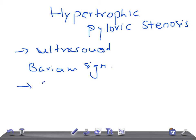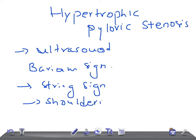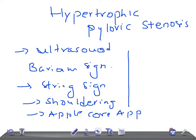On a barium meal, the different signs include — most importantly — the string sign, shouldering, apple core appearance, and double track sign. Just Google the images, guys; you will remember them for a longer time.